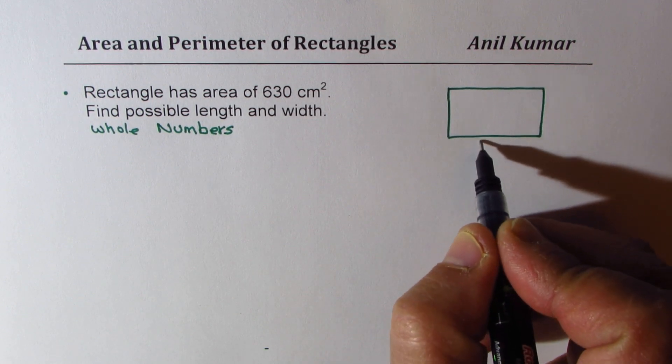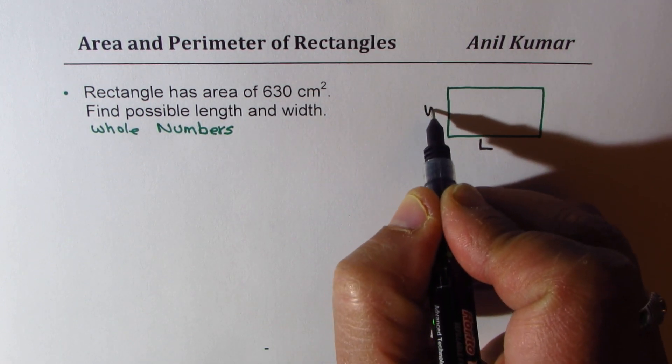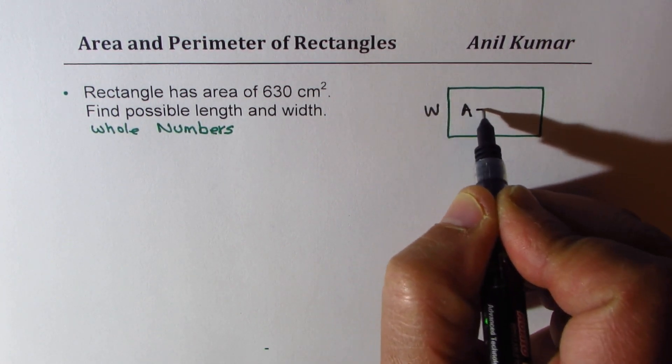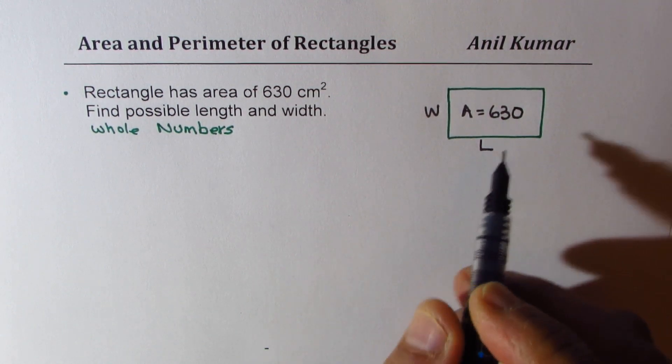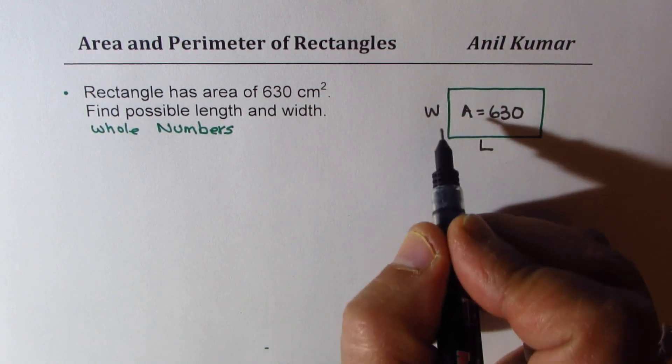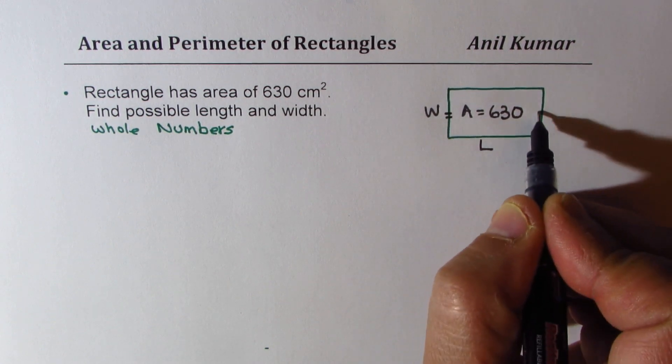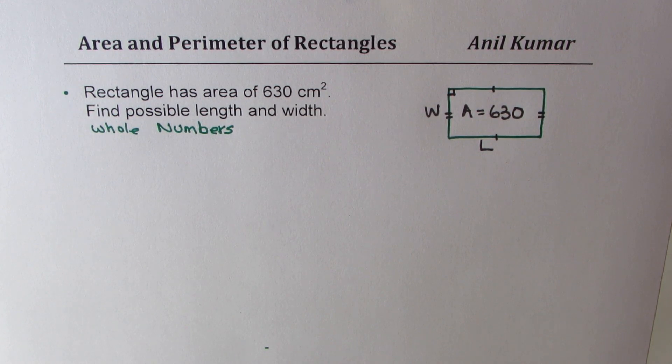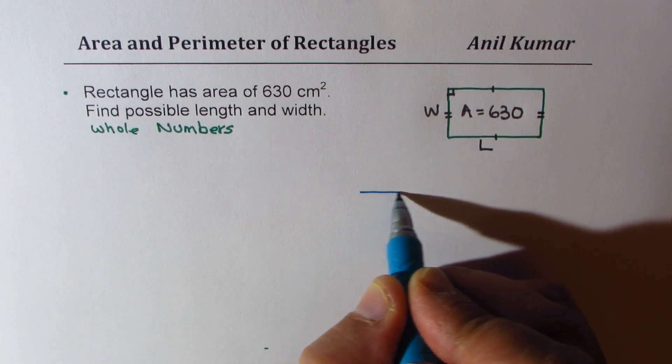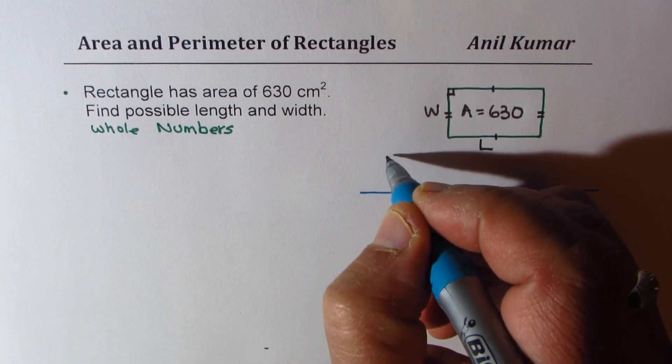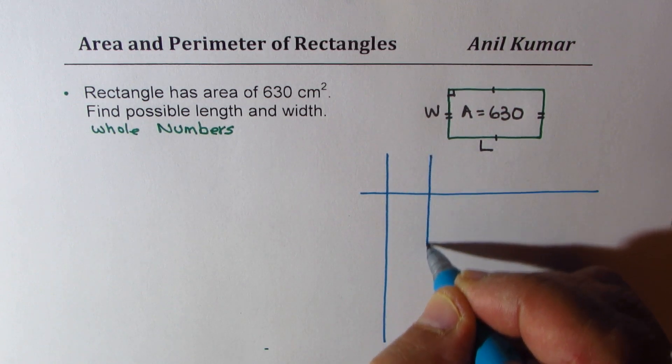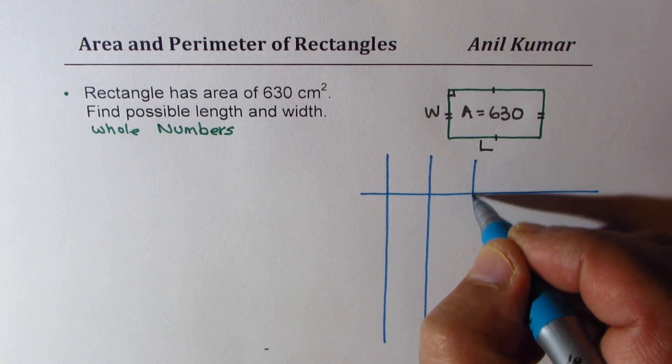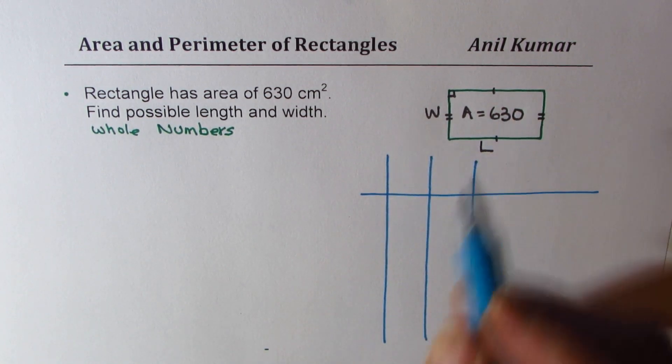So here is a rectangle. Let's say the length is L, width is W. We know the area is 630. Question is, how do we find different combinations of length and width in this rectangle? The best way to go about is to create table of values. So what we will do here is that we'll write down the values for different length and width which could give us area of 630.